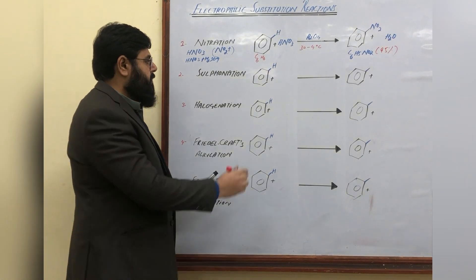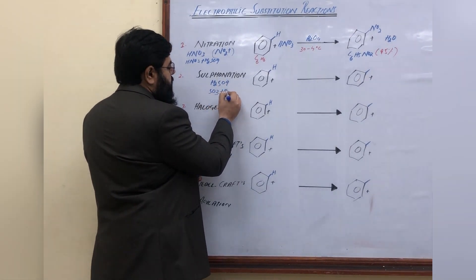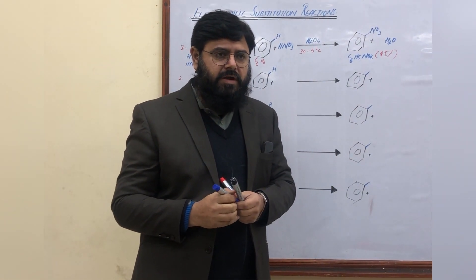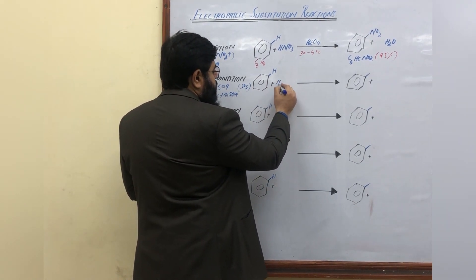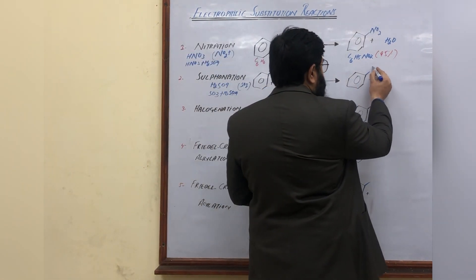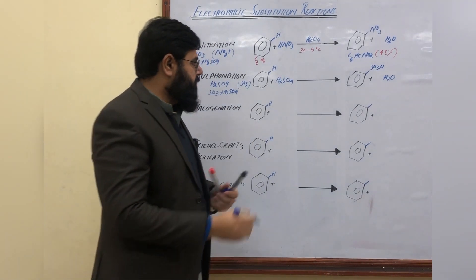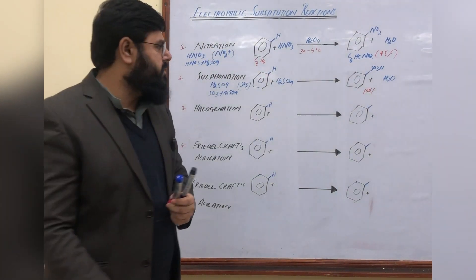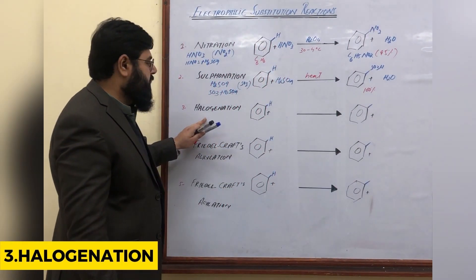In sulfonation, either sulfuric acid or sulfur trioxide plus sulfuric acid are used as sulfonating agents. Both of these reagents produce the acting electrophile SO₃. Sulfuric acid reacts with benzene to give benzene sulfonic acid, with water as a byproduct. This reaction proceeds in 100 percent yield, and the reaction requires only heat along with the reactants.